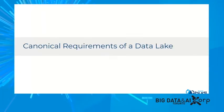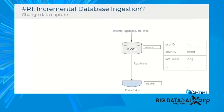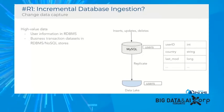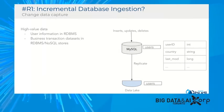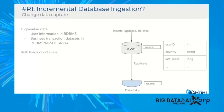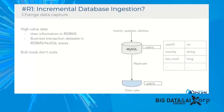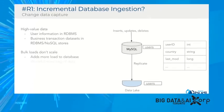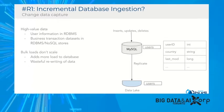To understand how to build a data lake, let's talk about the canonical requirements. The first requirement is around incremental database ingestion. Think about a business with microservices storing high-value data in a database like MySQL — for example, user information with user ID, country ID, and last modification time. One way to represent this data on a data lake is bulk loads, but bulk loads don't scale because they add load to the database and do wasteful rewriting — only a few records may have changed, but you end up rewriting the entire dataset.